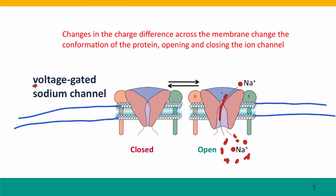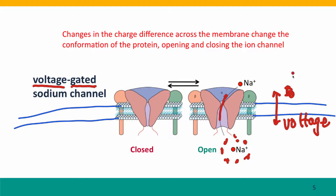This membrane transport protein is gated by voltage. In addition to providing a channel for transport that can open and close, it has sensory subunits — these beta subunits here — which sense the voltage across the membrane, the difference in charge between the two sides. When that difference reaches a particularly high level, it triggers the channel to open, allowing sodium ions to move from one side to the other. This changes the voltage difference across the membrane, and once they've moved across, the voltage difference has dropped and the channel closes.